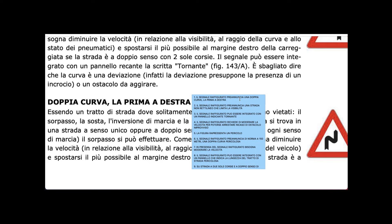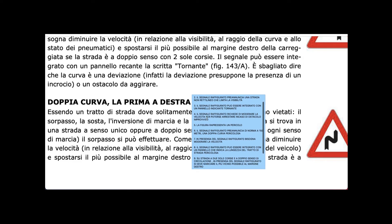The sign announces a double curve, the first to the right — 'doppia curva, la prima a destra'. It also announces a road that is not straight — 'non rettilinea' — which limits our visibility. This sign can also be integrated with a panel indicating 'tornante', just as with the single curve sign.